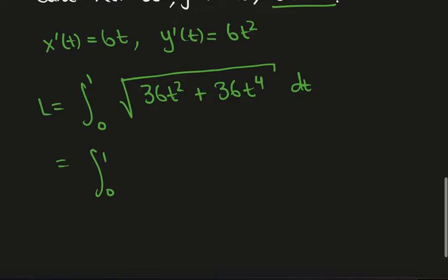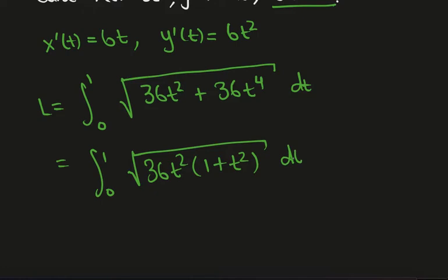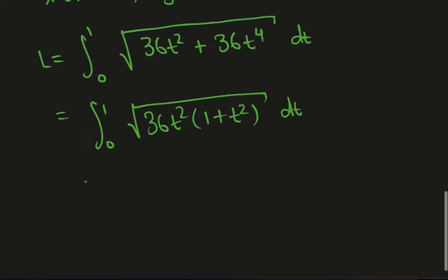We can simplify this a little bit. We can factor out a 36t², and what we'll be left with is 1 plus t² dt. We can take the 36t² out, and so what we end up with is 6t times the square root of 1 plus t² dt.